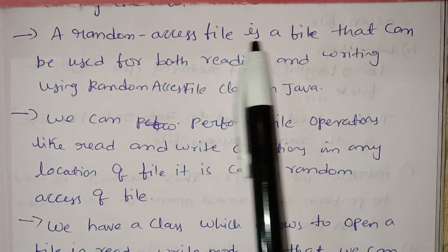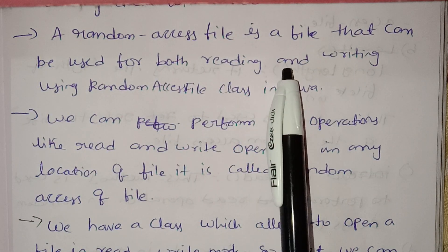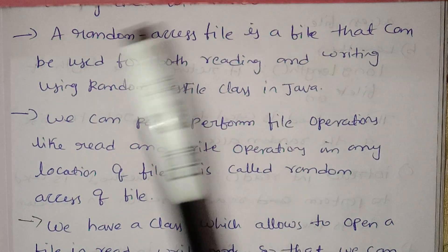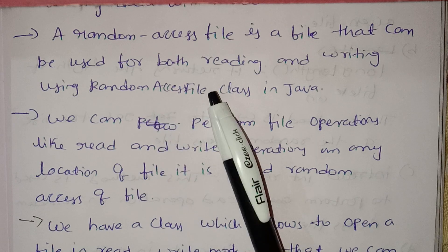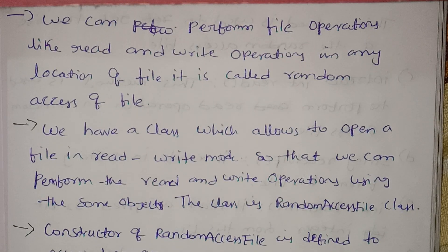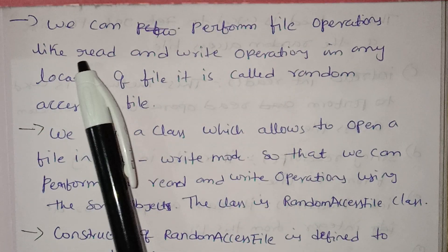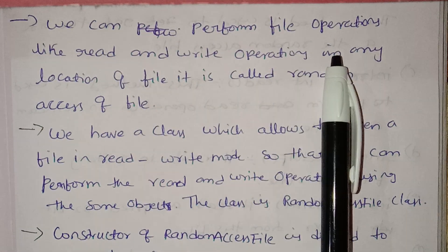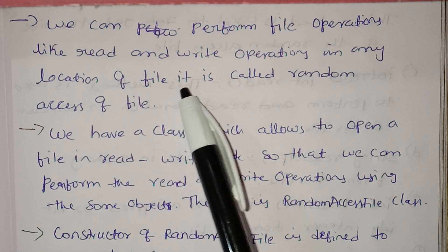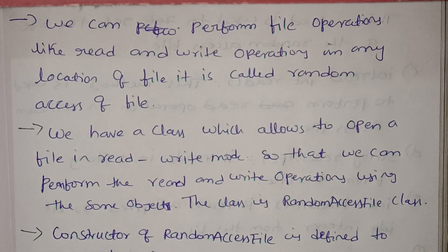Random access file is a file that can be used for both reading and writing — reading and writing using the random access class in Java. We can perform file operations like read and write operations in any location of the file. That is why it is called a random access file.